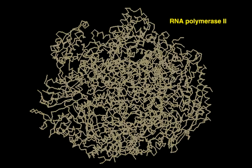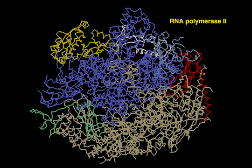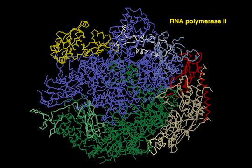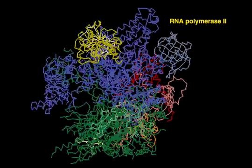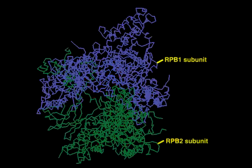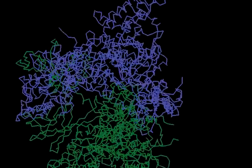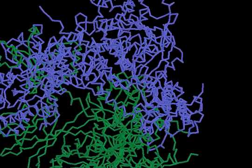Eukaryotic RNA polymerase II transcribes all messenger RNA molecules in the cell. It is a huge complex of 10 different protein subunits. The active site of the enzyme lies at the interface between the two largest subunits.